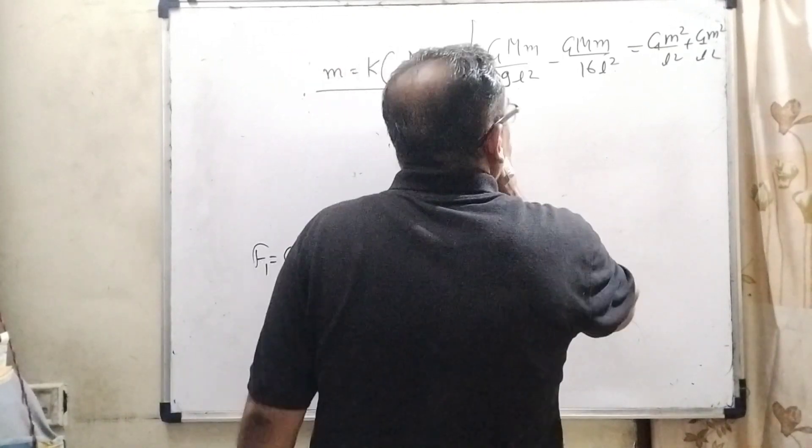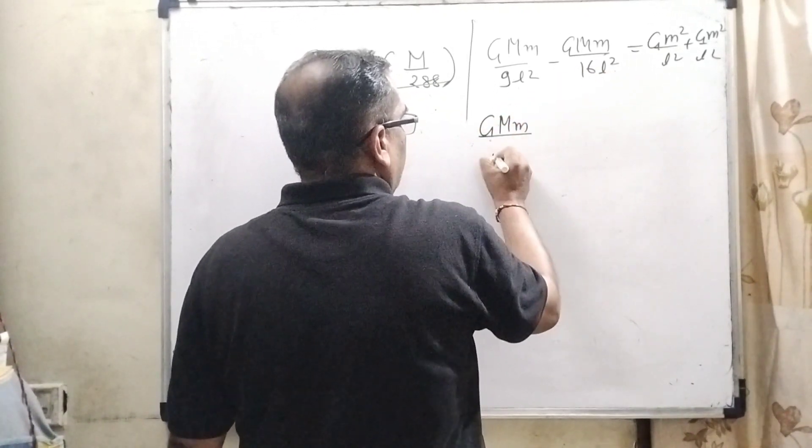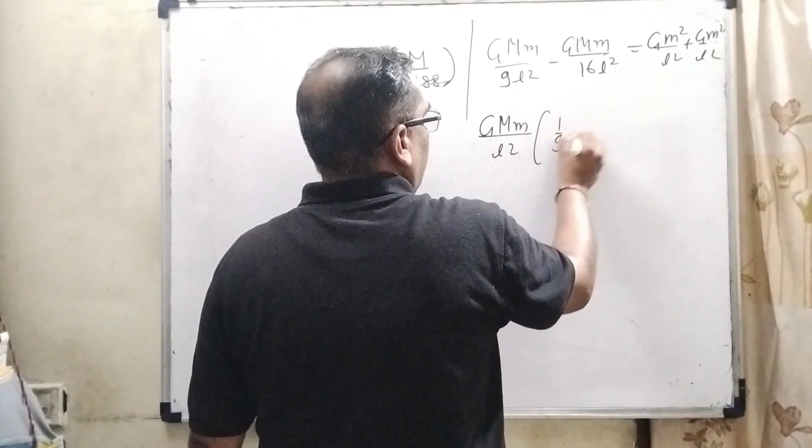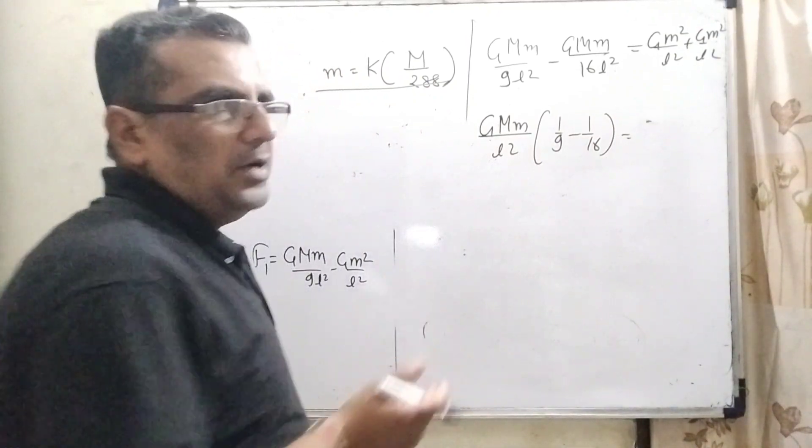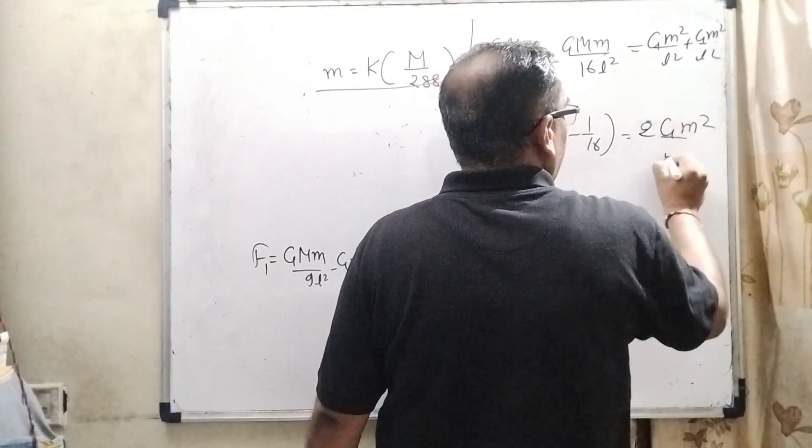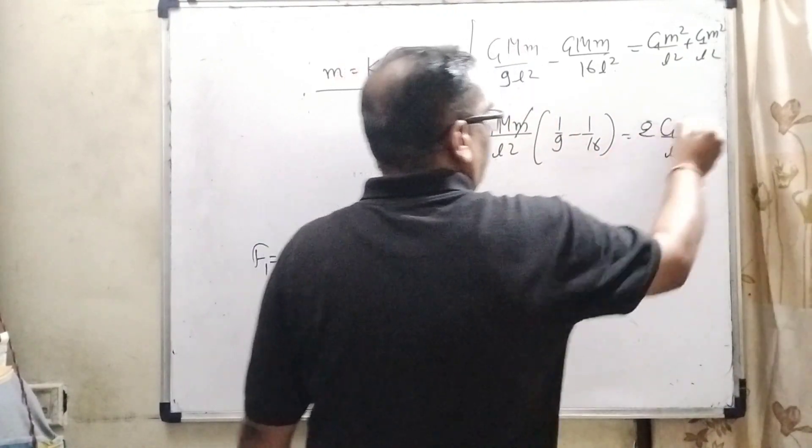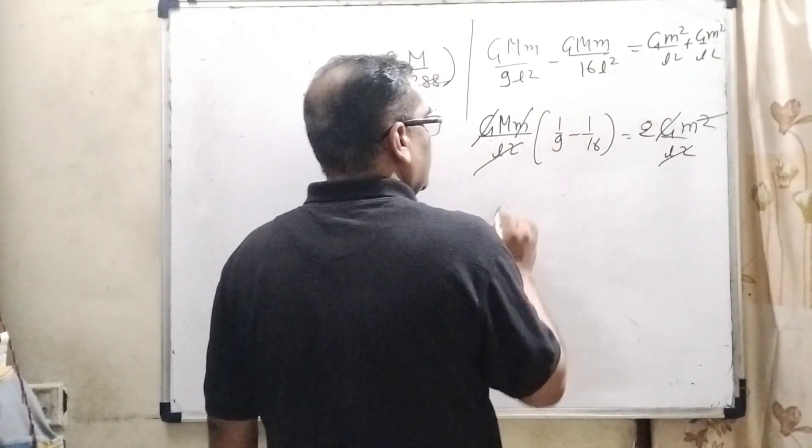Solving this term by transposing the terms, G capital M small m gets common, L square gets common: 1 by 9 minus 1 by 16 equals G M square upon L square. G M square upon L square is 2 times, so therefore 2G small m square by L square. Small m and M cancel out, L square and L square cancel out, capital G and capital G cancel out.